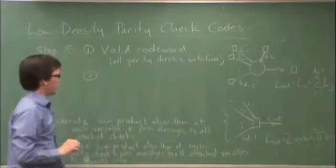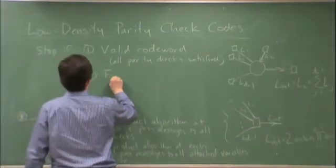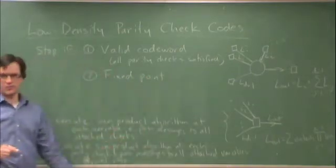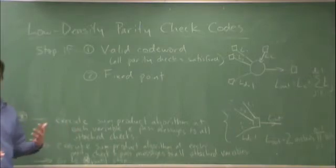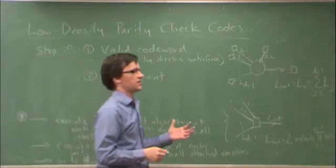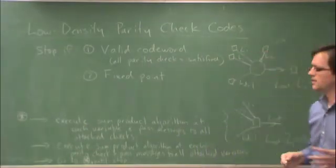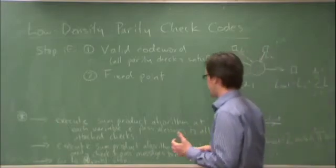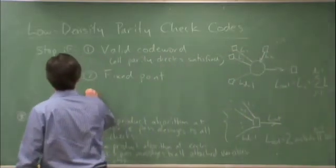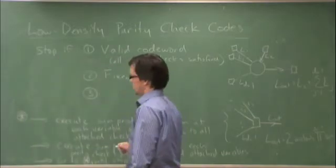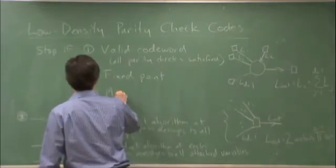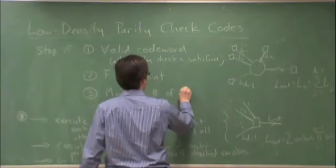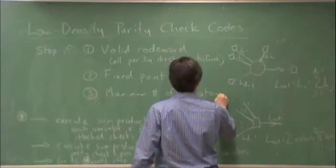Secondly, I like that about the fixed point. So let's put that in. Fixed point. In other words, the messages aren't changing very much, or the messages seem to be approaching some constant value. That's actually guaranteed to eventually happen, but it could take an extremely long time. So because it could take an extremely long time, we'll put in a third one. Maximum number of iterations reached.